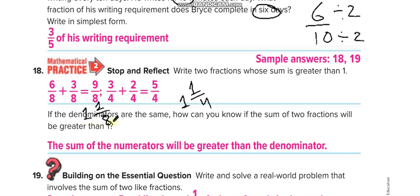If the denominators are the same, how can you know if the sum of two fractions will be greater than 1? The sum of the numerators — 6 plus 3 equals 9 — will be greater than the denominator. Here, 9 is greater than 8, and 5 is greater than 4, so the sum is greater than the denominator.